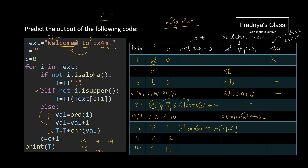We've reached the last character of the string — that is the 17th pass. It is an exclamation symbol, which satisfies the first criteria since it is not an alphabet. In that case, we concatenate star. After a lot of efforts, we finally got the output!